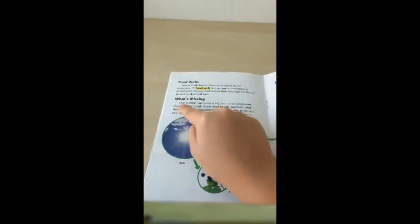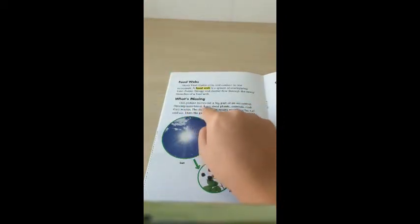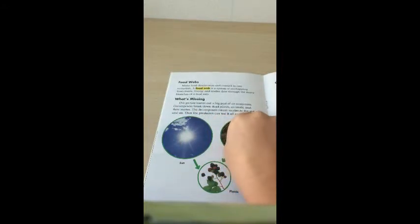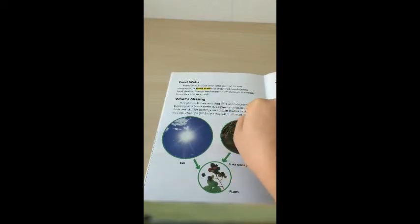What's missing? This picture leaves out a big part of an ecosystem. Decomposers break down dead plants, animals, and their waste. The decomposers return matter to the soil and air. Then the producers can use it all over again.